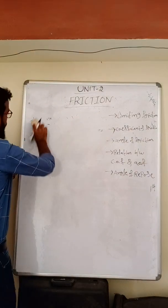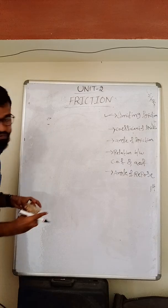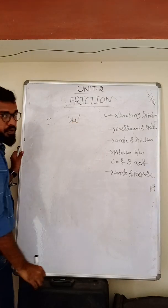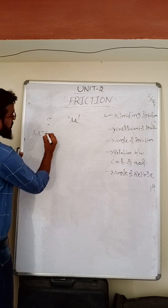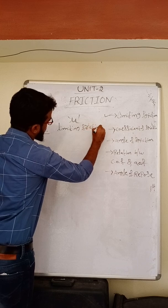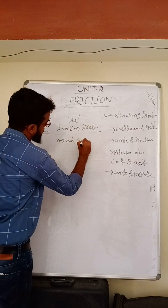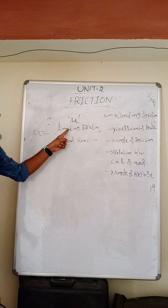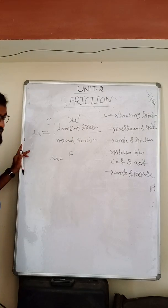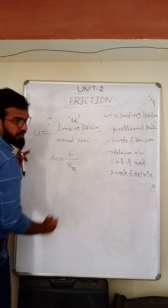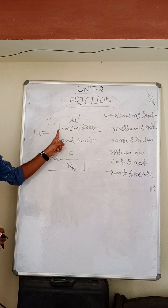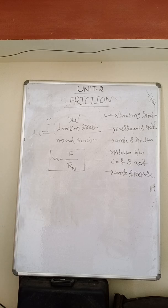The second topic is coefficient of friction. The coefficient of friction is denoted by the symbol mu (μ). It is defined as the ratio of limiting friction to the normal reaction. Mathematically, μ is equal to F divided by Rn, where F is the limiting friction and Rn is the normal reaction. So, μ = F/Rn.